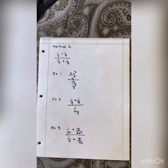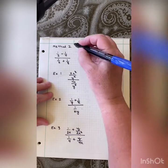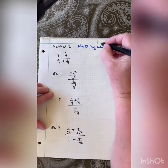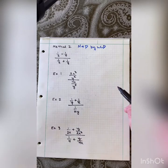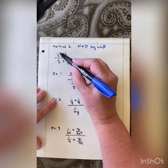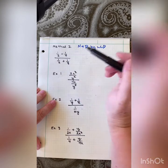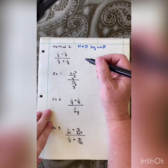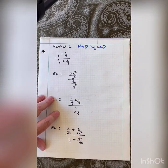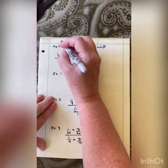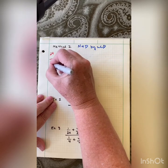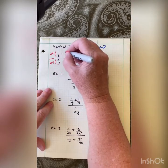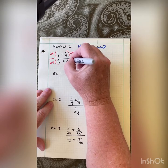Now let's take a look at method number two. In method number two, we multiply both the numerator and the denominator by the LCD. You find the LCD for all of your fractions. So that 24 actually gets distributed to everything — I'm just going to write it down next to every term.